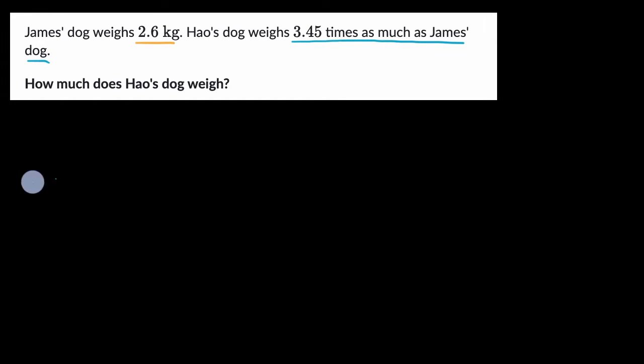Pause this video and try to figure that out. Well, Hao's dog is 3.45 times the weight of James' dog, which is 2.6, so we just have to multiply 3.45 times 2.6.